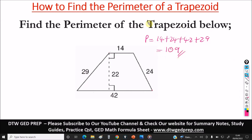Okay, so this is the answer. This is how to find the perimeter of the trapezoid.